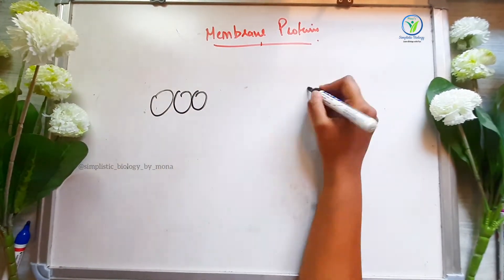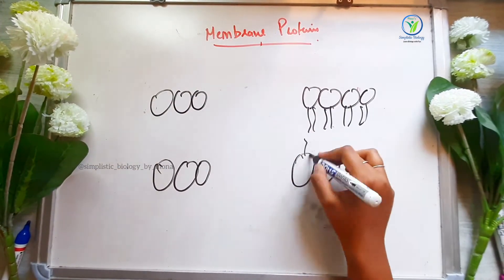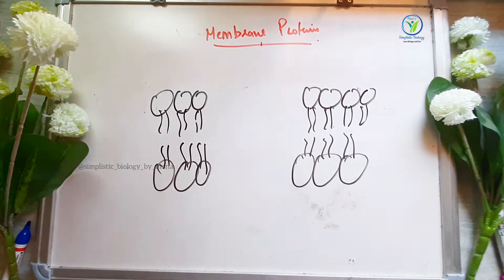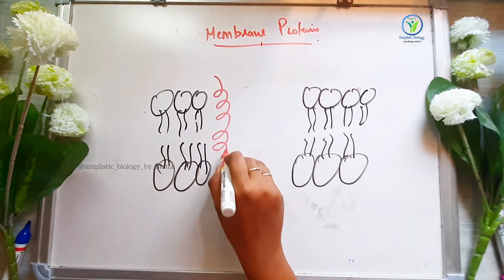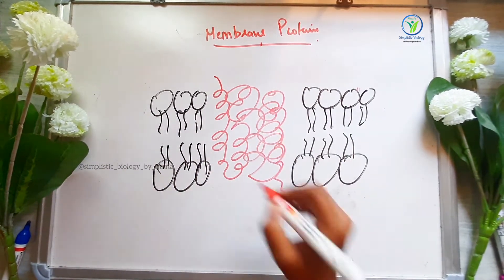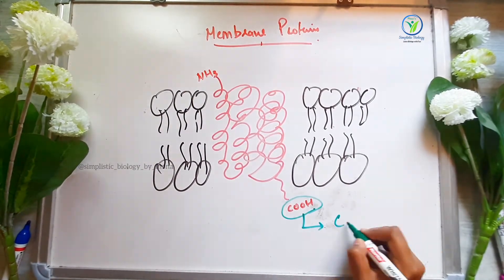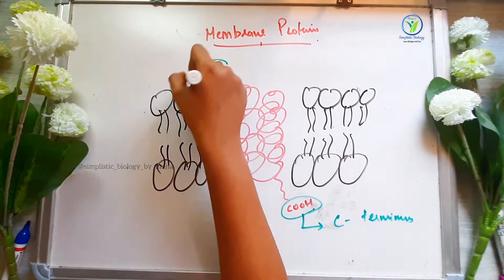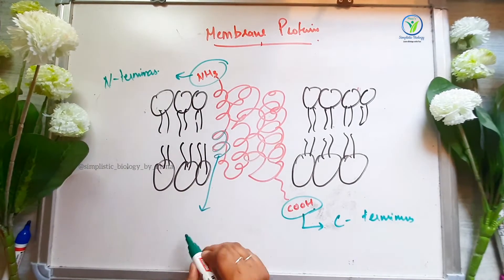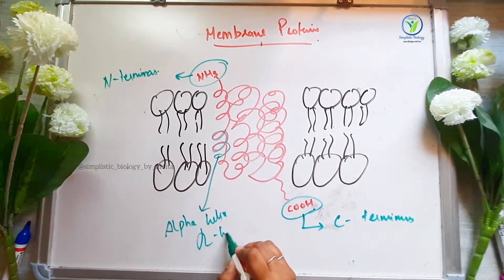The integral protein structure is embedded within the lipid bilayer. It is a transmembrane protein. There are two termini: C-terminus and N-terminus. Normally, the C-terminus is on the cytoplasmic side and the N-terminus is on the extracellular side. In this protein, the helical structure is an alpha helix.